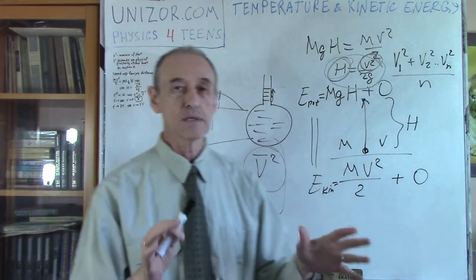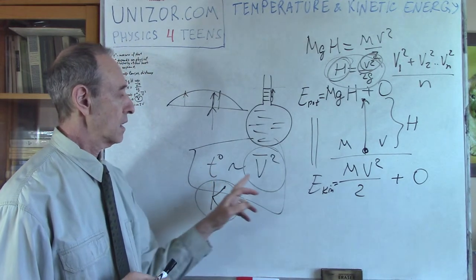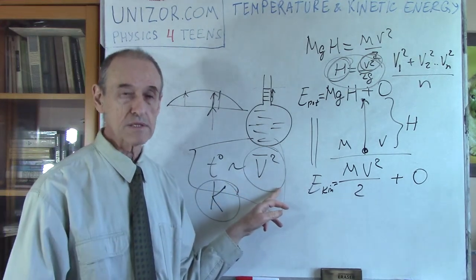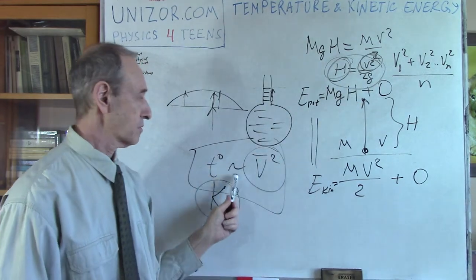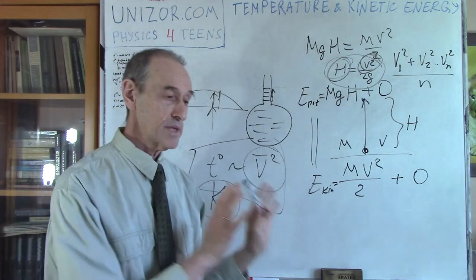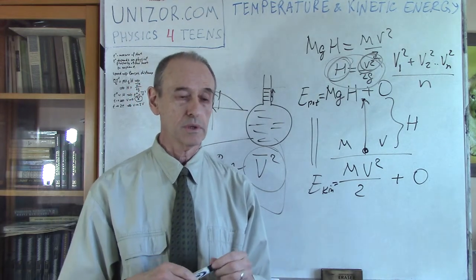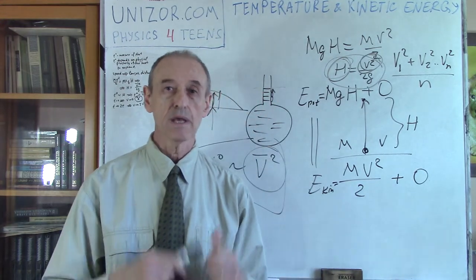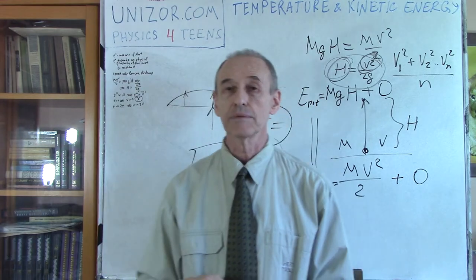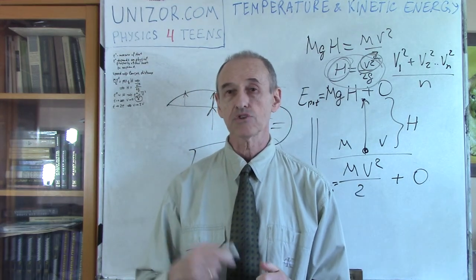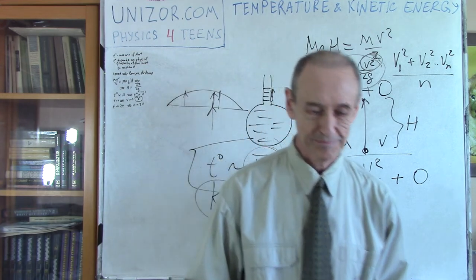That is basically the result of this lecture: temperature in Kelvin is proportional to the average of the squares of the molecular speeds. Interestingly, it does not depend on the mass of the molecule. This is the preparation for the kinetic theory of ideal gases, which will be the subject of our next lecture. That's it for today — thanks very much. Read the explanation and notes that accompany every lecture on the unizor.com website, which would be very helpful.